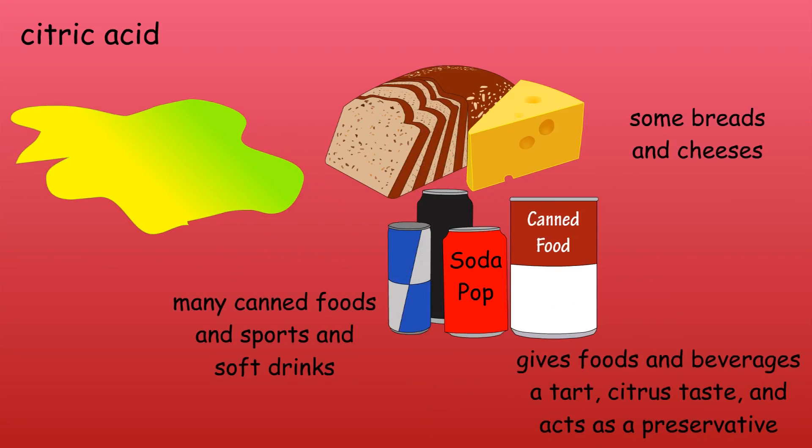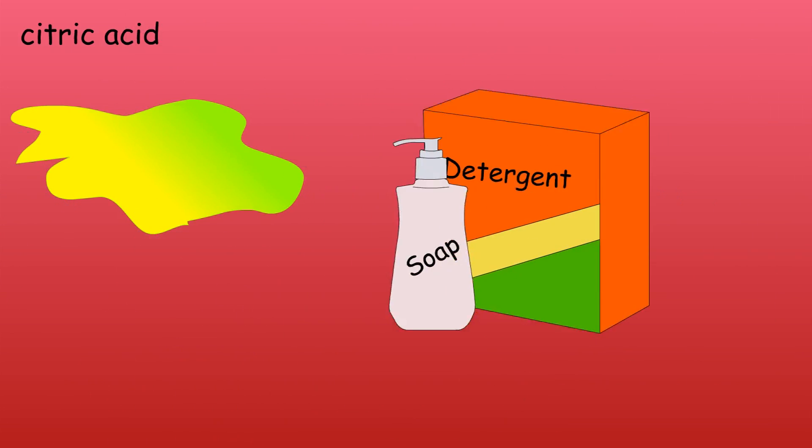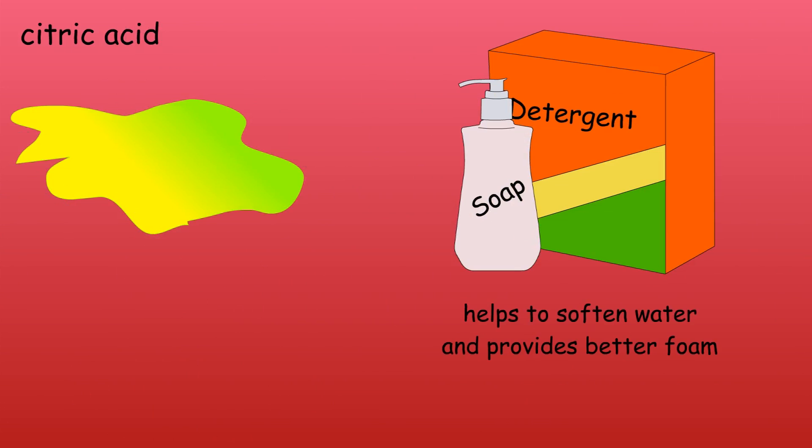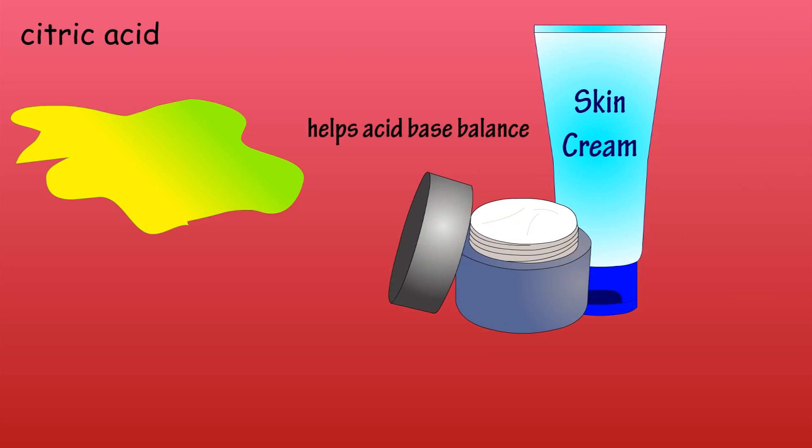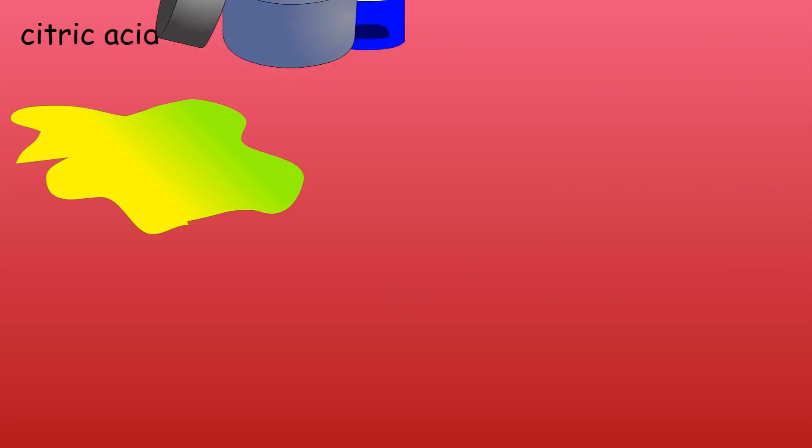Most citric acid is used in foods and beverages as it provides a tart, citrus taste and acts as a preservative. Because of its acidic pH, many bacteria are unable to grow in its environment. It's also found in soaps and detergents because of its ability to soften water, and many cosmetics use it as a preservative as it helps adjust the acid-base balance.